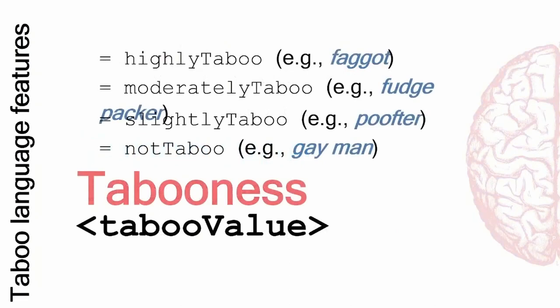Next is the tabooness value. We include this to rate words in terms of their observed tabooness in and/or for certain groups. It's important to realize that this tabooness rating can change over time, and therefore it's very important that it gets regularly checked — similar to how television broadcasters have offices that evaluate which words can be used at which time.